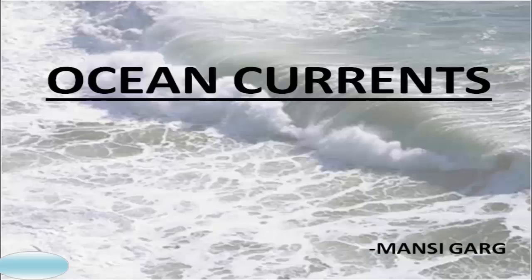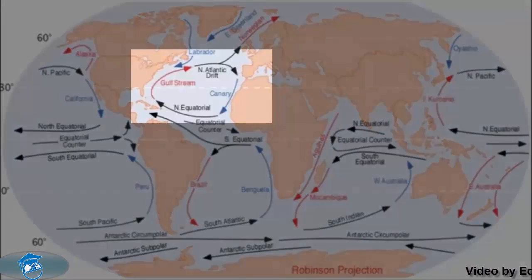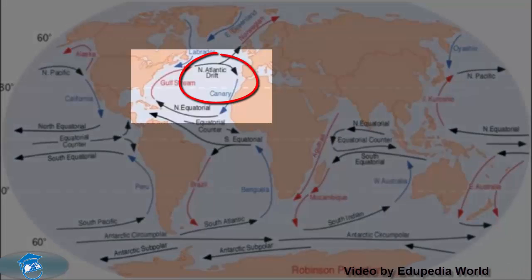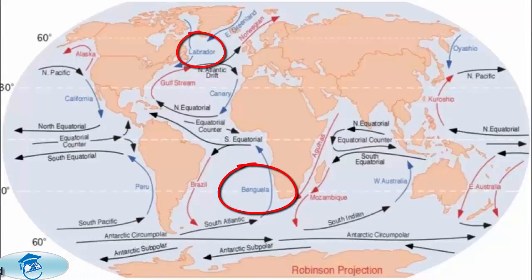Ocean currents are large masses of surface water that circulate in regular patterns around the oceans — for example, the North Atlantic Drift, the Labrador Current, the Benguela Current, as you can also see on your screens.